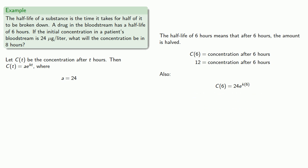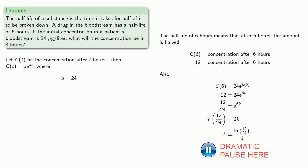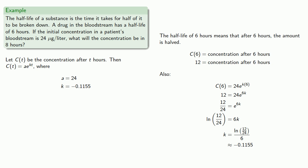We know C(6), and we can solve for k. And an important idea here is don't round until you reach the final answer. So we can leave this in the form log(12/24) divided by 6, until we enter it into a calculator to get our final answer, which we have to round in order to be able to write it down.